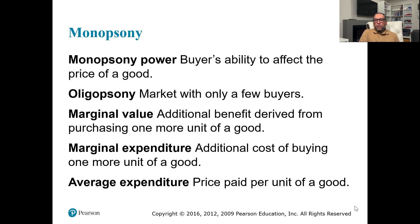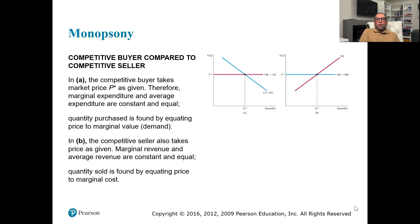Average expenditure is the price paid per unit of a good. Now, if we look at monopsony from a competitive market point of view, we can see how they compare.